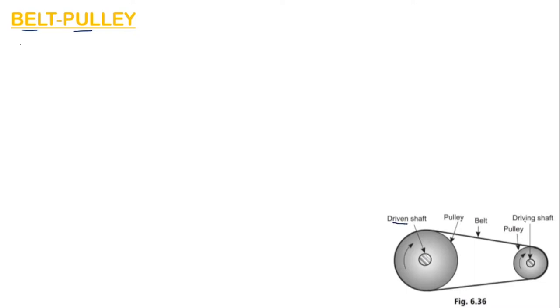There are two shafts — a driven shaft and a driving shaft. When you extend them, you can see that they are parallel to each other. Pulley is a circular object. There are two pulleys and a belt, and this belt and pulley are used to transmit power from one shaft to another.